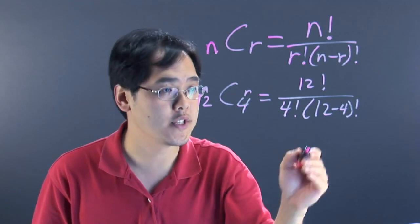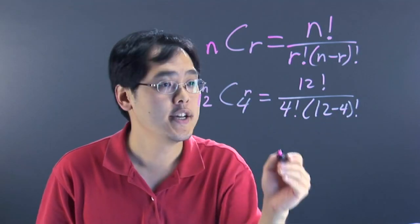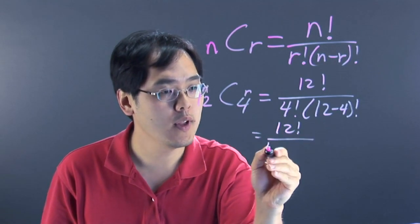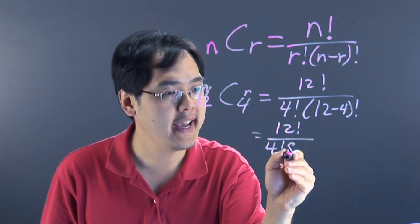Like I said before, you got to do the parentheses first. 12 minus 4 is 8. So you have 12 factorial over 4 factorial, 8 factorial.